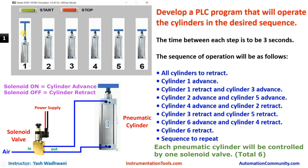As soon as we cut off the supply of the solenoid valve, the air supply to the lower connection is removed and air will flow from this position. So the cylinder will retract back to its original position. That was all about the basics of pneumatic cylinders and the solenoid valve.